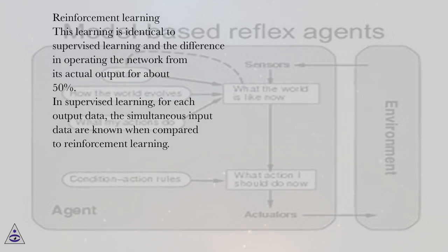Reinforcement learning. This learning is identical to supervised learning, and the difference in operating the network from its actual output for about 50%. In supervised learning, for each output data, the simultaneous input data are known when compared to reinforcement learning.